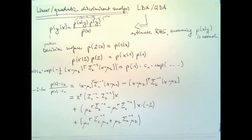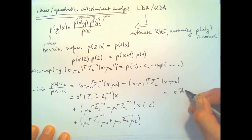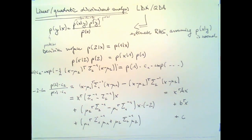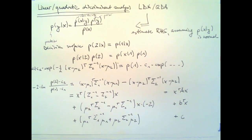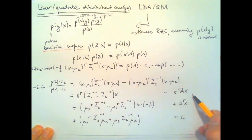So, in other words, what we have is something of the form X transpose AX plus some vector B plus a scalar. And, if you look at what we started out from, then, this is now my decision surface. This thing here.